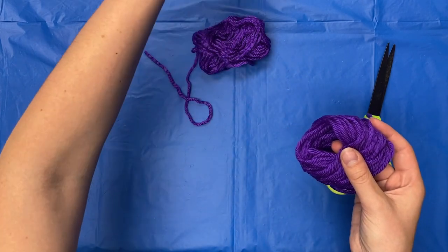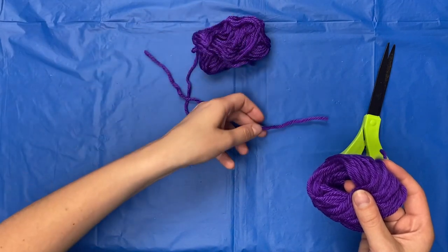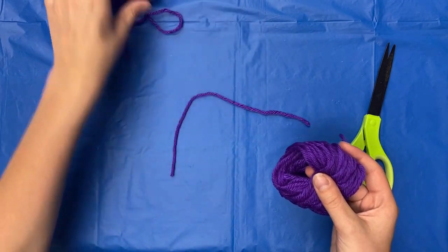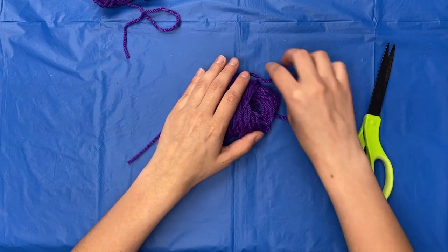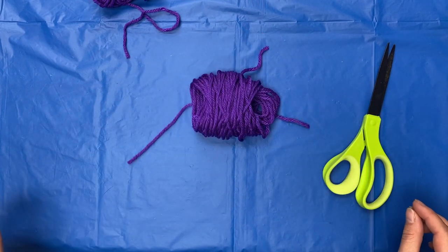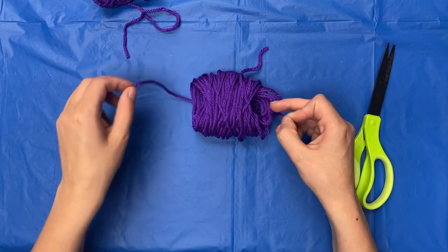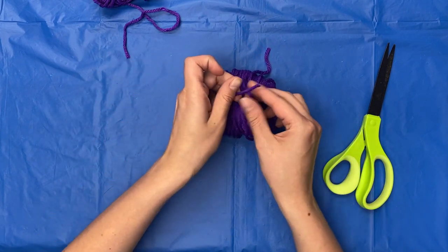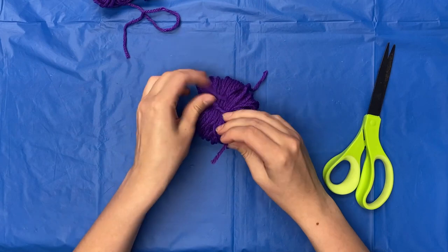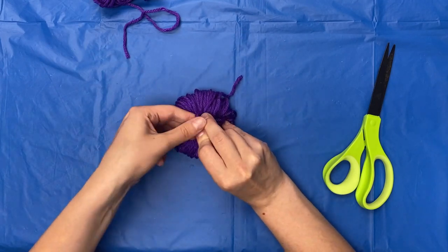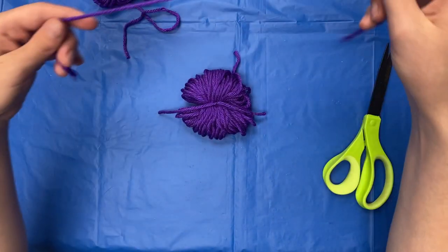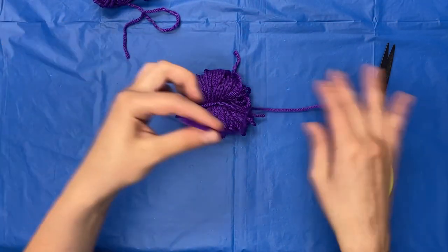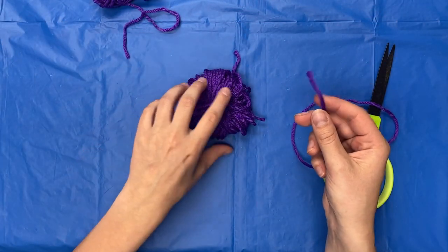Grab your smaller string and place the rolled up yarn on top. Tie a tight knot in the middle. Take your long string and tie it in the same spot.